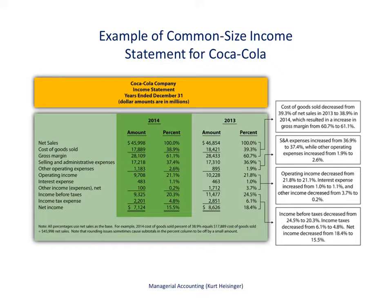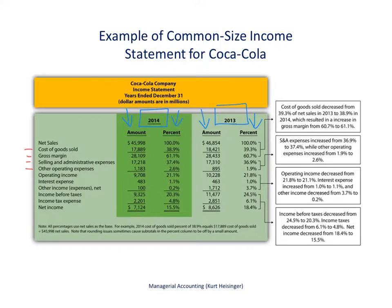Here's an example of common-size income statement analysis for Coca-Cola. This is the income statement for Coca-Cola for two years — 2014 and 2013. We have the dollar amount for each year, which is what's typically shown in the income statement, but we also have the common-size analysis columns showing the percent of each line item — cost of goods sold, gross margin, selling and administrative — as a percentage of net sales.